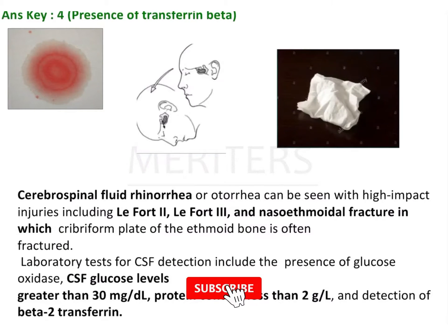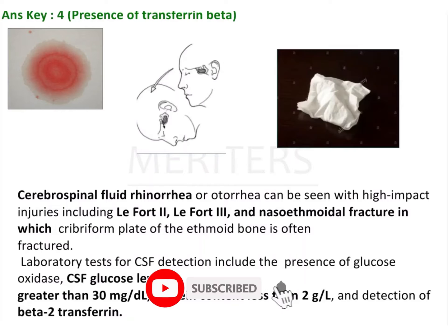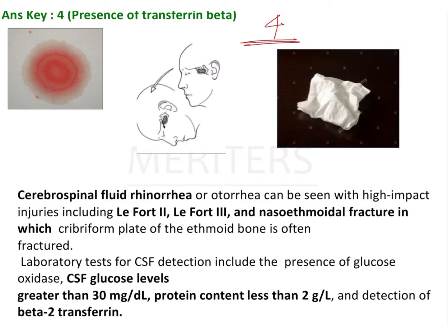When it comes to CSF leakage, we need to remember 4 signs that have been asked repeatedly. The first is the halo effect. When the patient is sleeping or there is leakage from the nose with both blood and CSF, the blood clots in the center while the CSF spreads a little more.